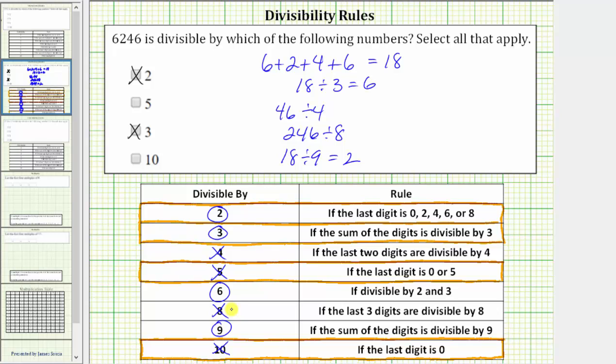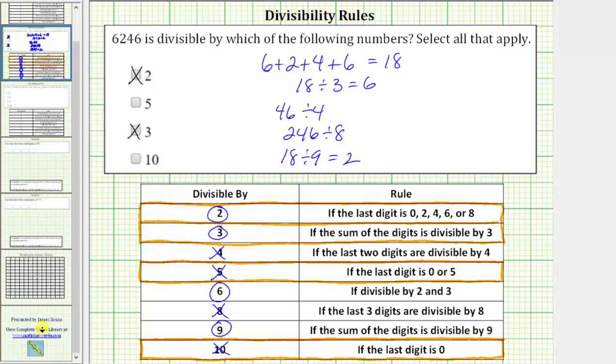So for the question, we only select 2 and 3. But using all these rules, 6,246 is divisible by 2, 3, 6, and 9. I hope you found this helpful.